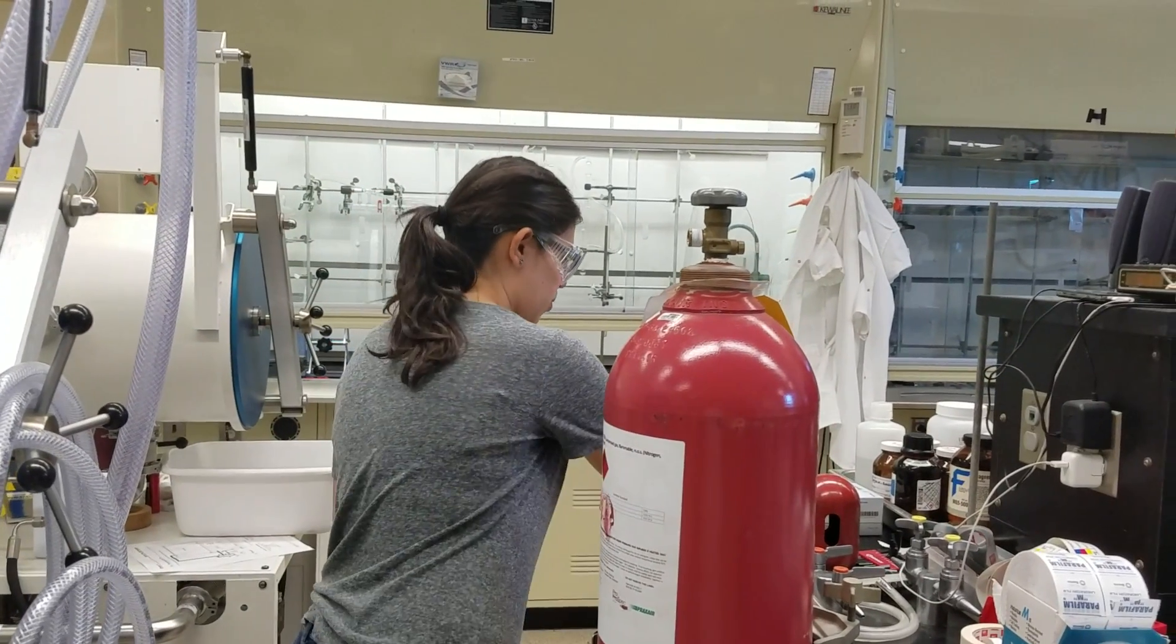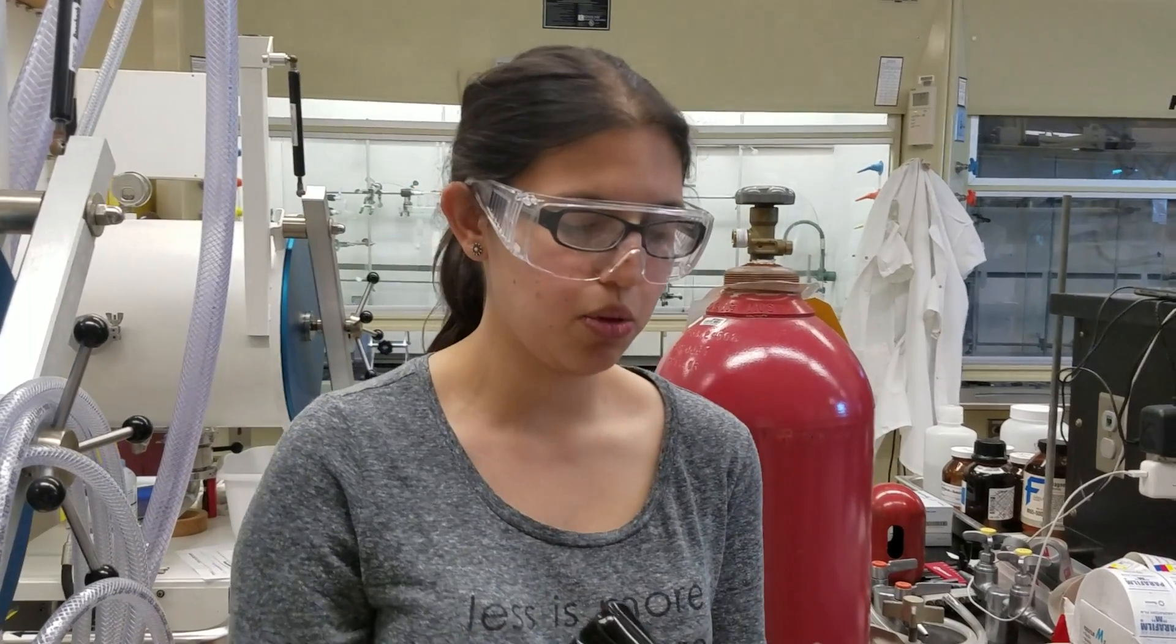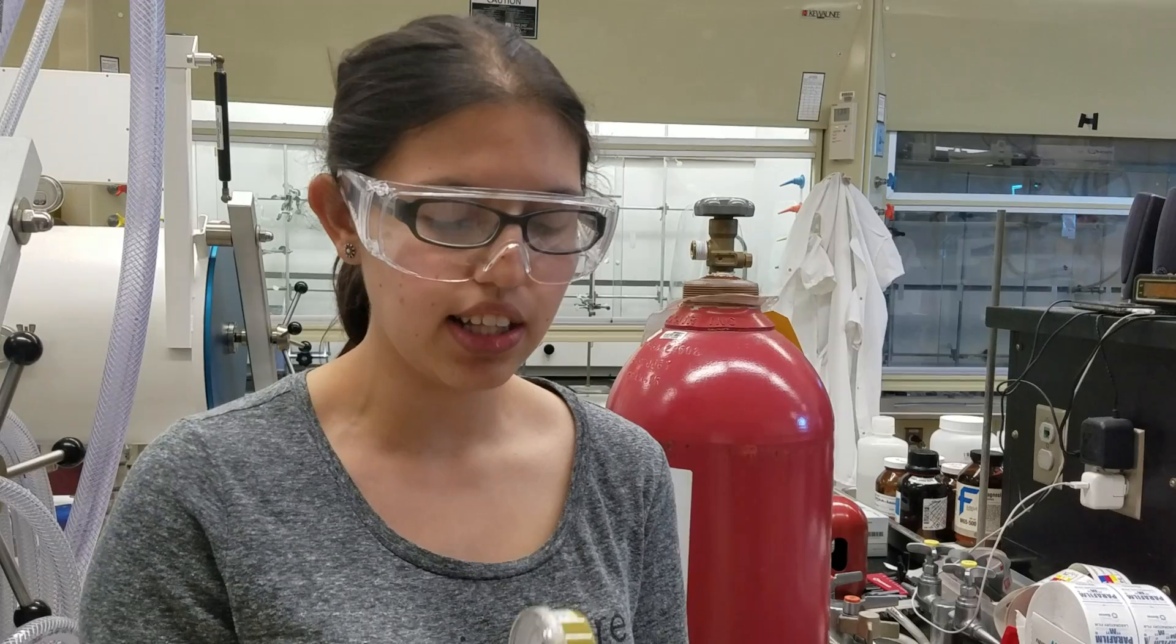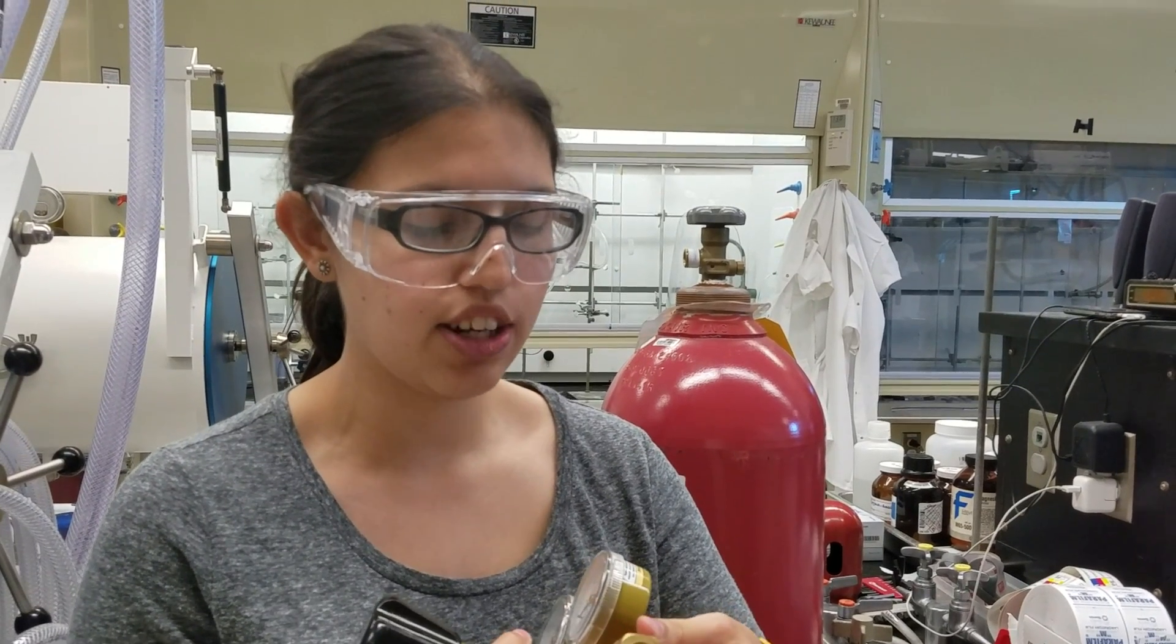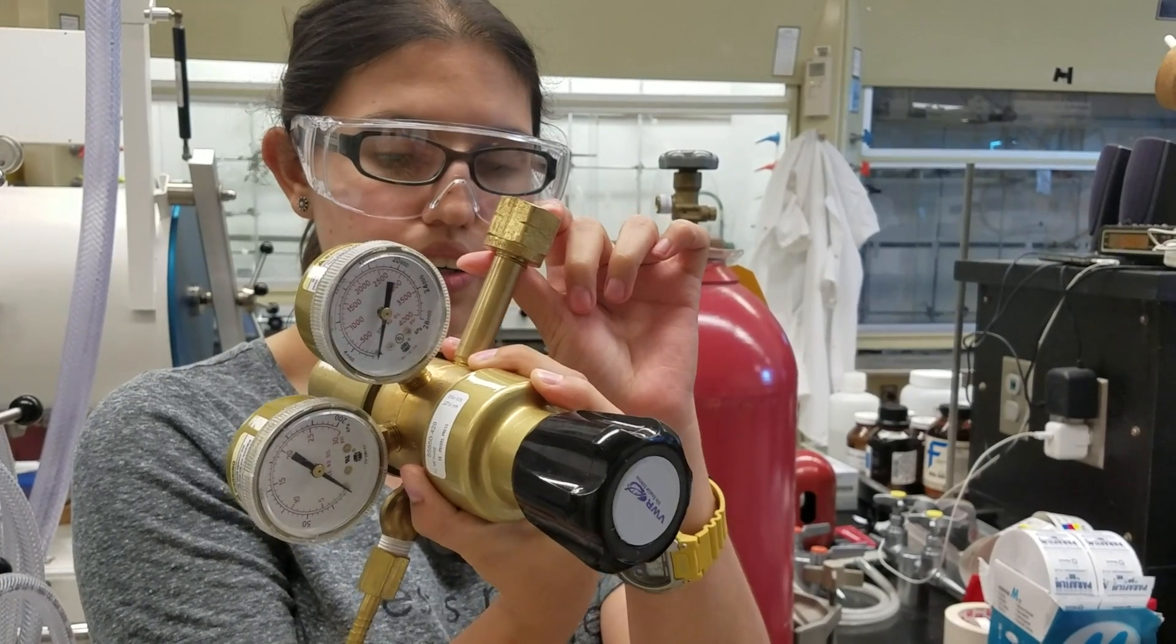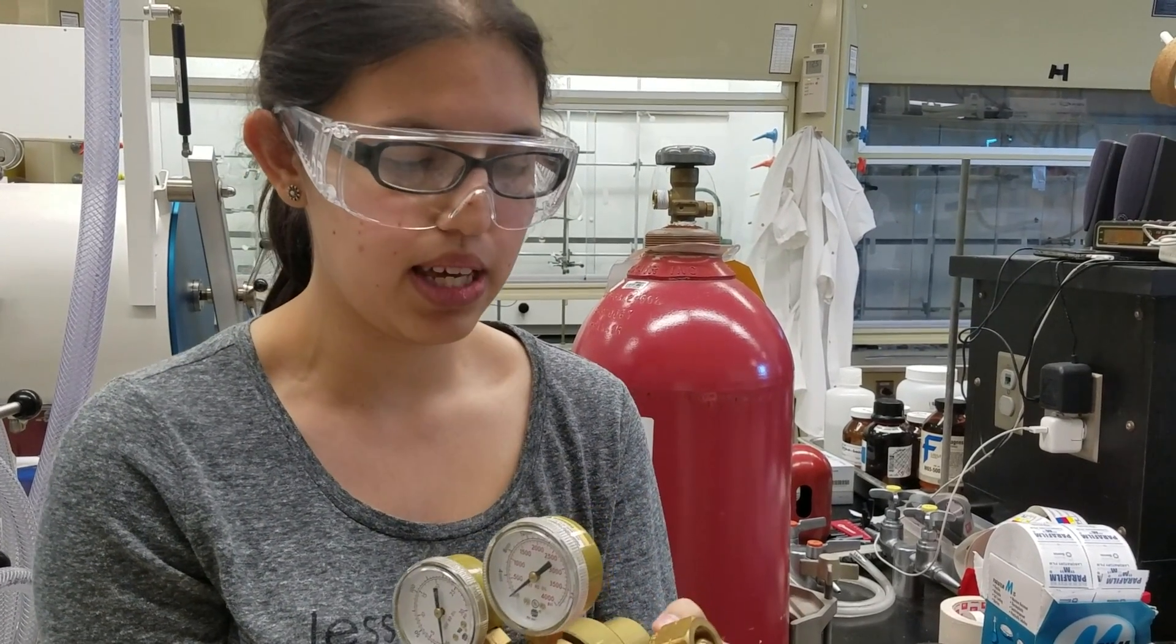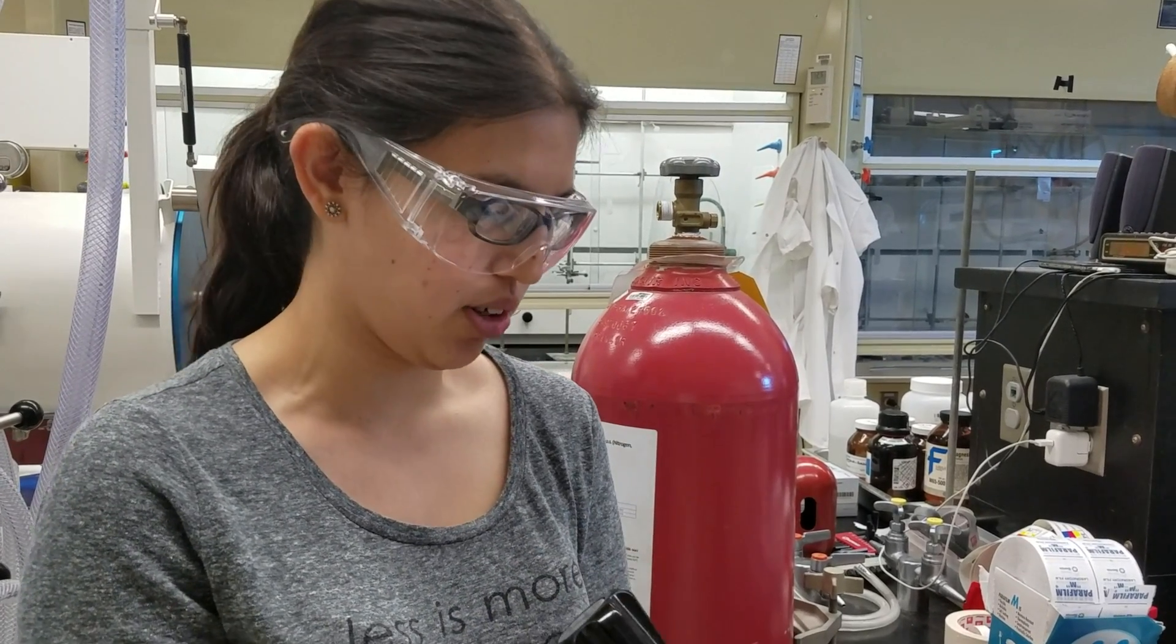So the third thing we have to do is get this regulator. In this case, because we're using a mixture of hydrogen and nitrogen gases, we have to use a hydrogen regulator. And you can make sure that it's the hydrogen regulator by looking at the nut on the regulator. And it should say hydrogen. It should be CGA 350. If it's anything but that, don't use it. It's dangerous.